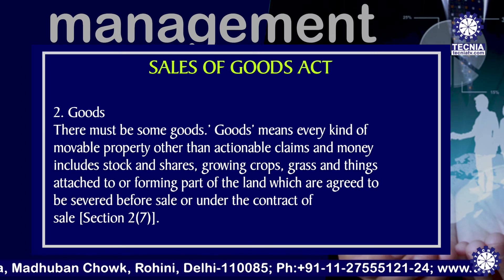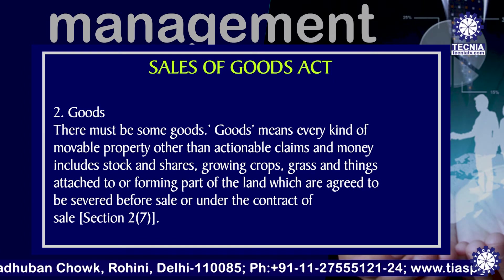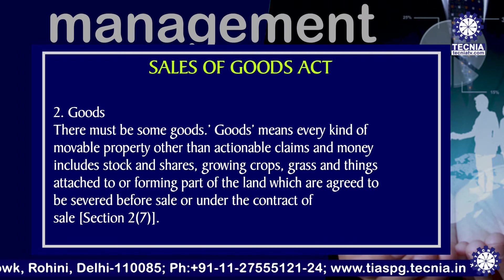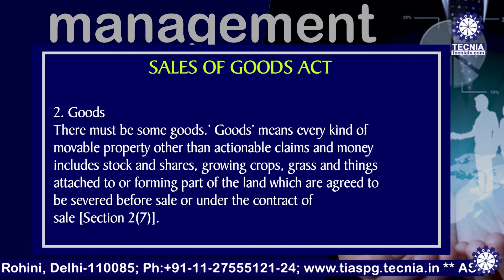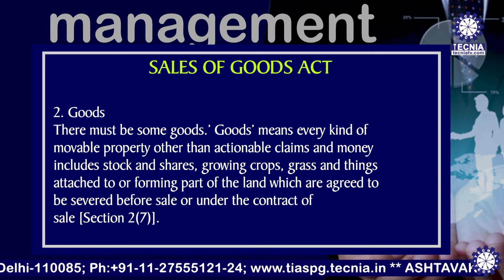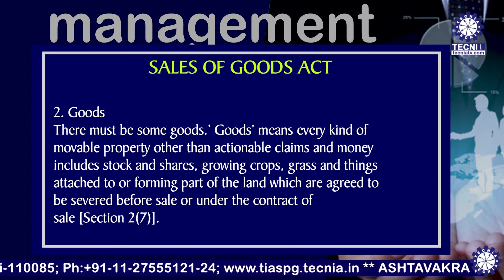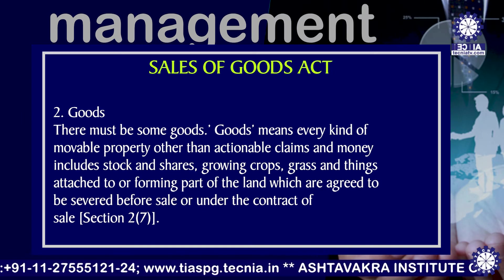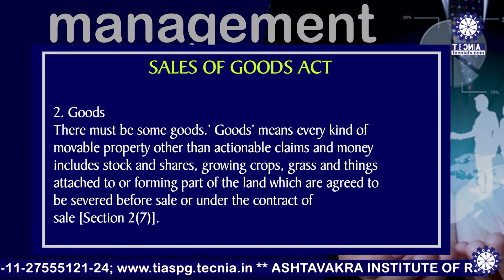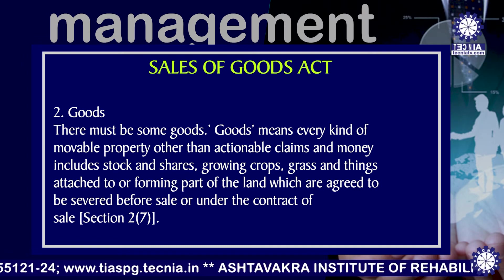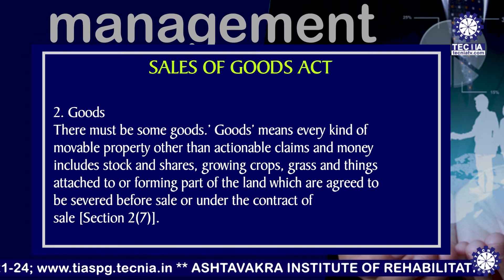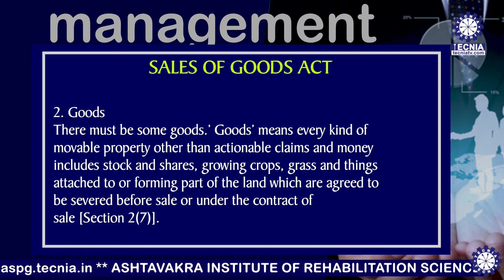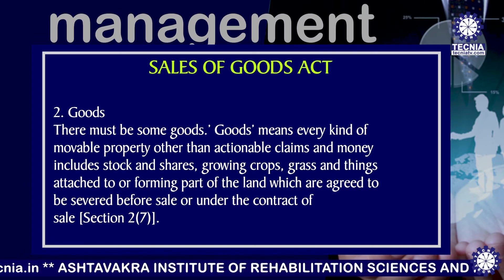Number 2, goods. There must be some goods. Goods means every kind of movable property other than actionable claims and money, and includes stock and shares, growing crops, grass and things attached to or forming parts of the land which are agreed to be severed before sale or under the contract of sale. Section 2, subsection 7.